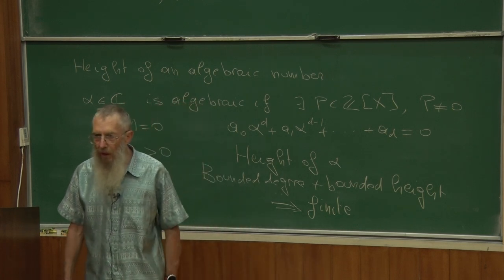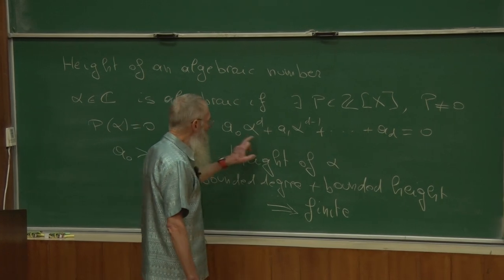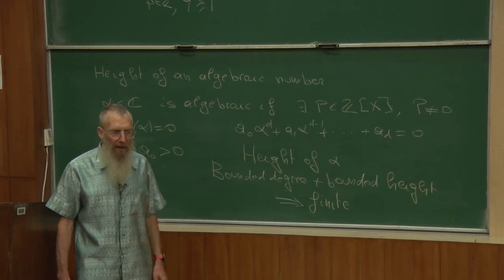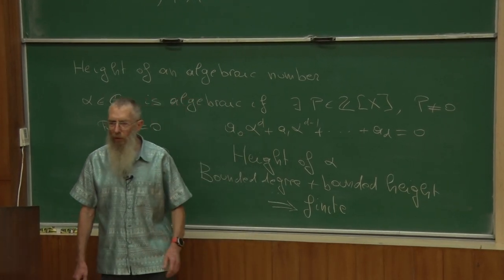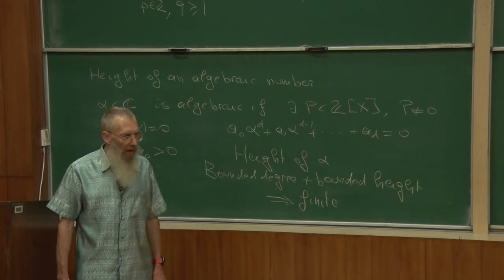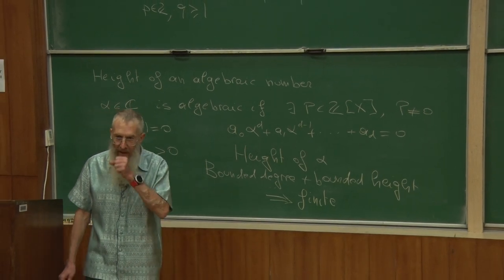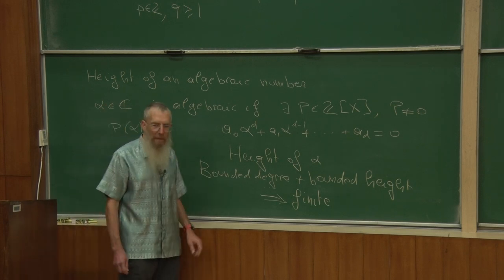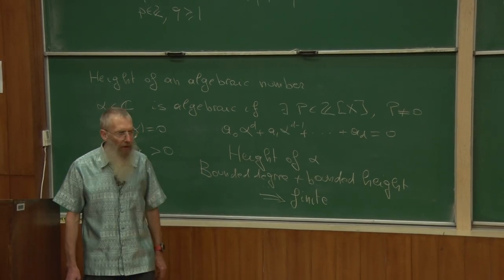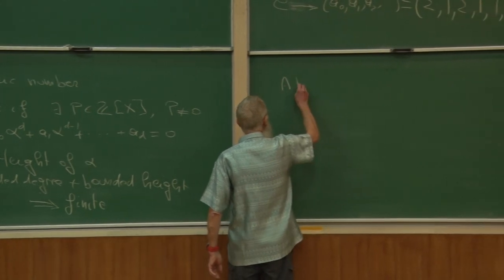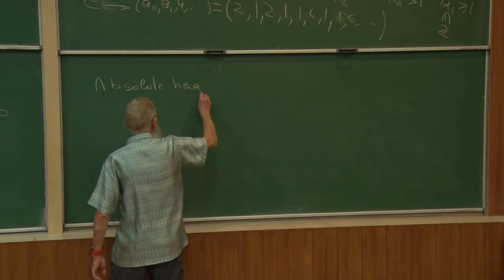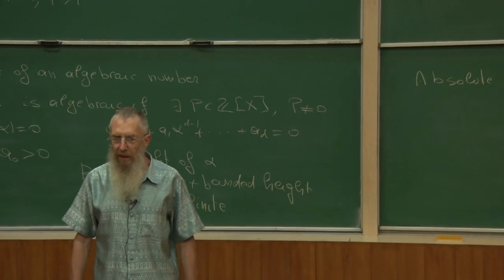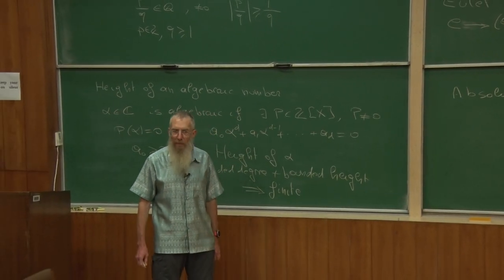One definition — the naive height — is to take the maximum of |a₀|, |a₁|, ..., |aₐ| for the minimal polynomial. There are many equivalent definitions, analogous to the equivalence of norms on a finite-dimensional vector space. However, one definition is better than the others because it has several equivalent characterizations: this is the so-called absolute height. Because it can be defined in several equivalent ways, it is very useful and has many applications, particularly to Diophantine geometry.